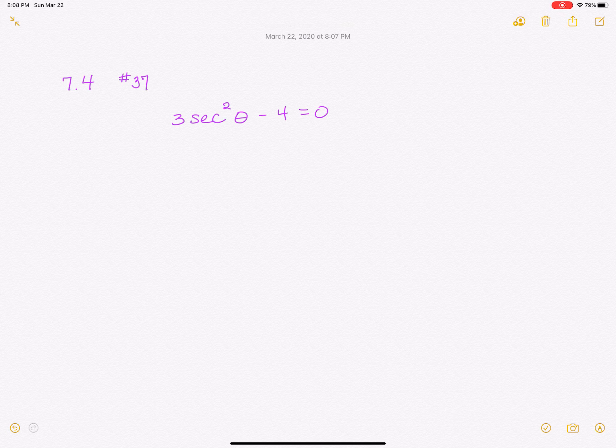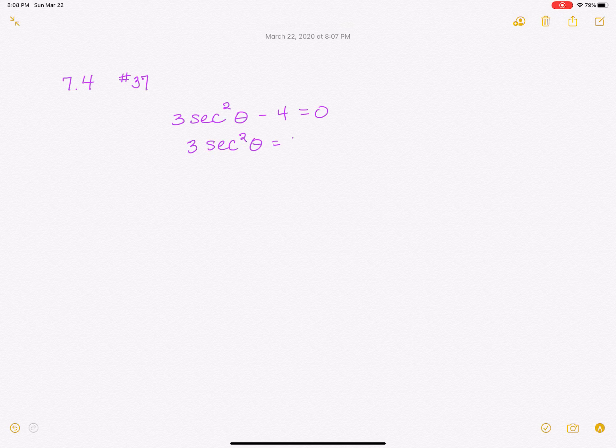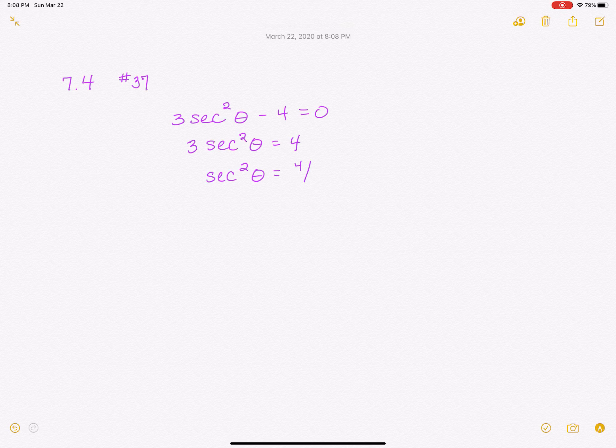So if I'm going to solve for secant of theta here, the first thing I'm going to do is add 4 to both sides. So I've got 3 times the secant squared of theta equals 4. Then I'm going to divide both sides by 3. So I get secant squared of theta equals 4 over 3.